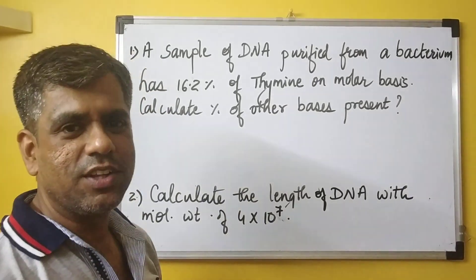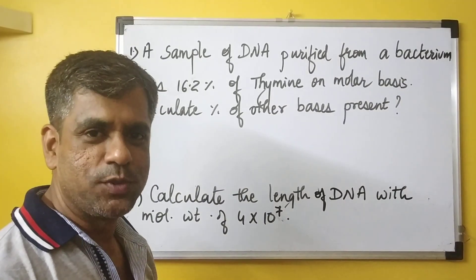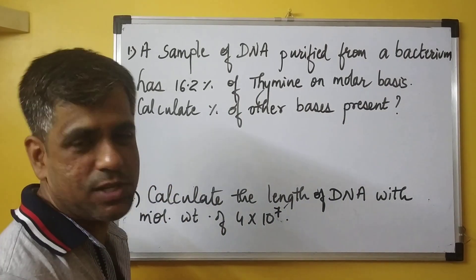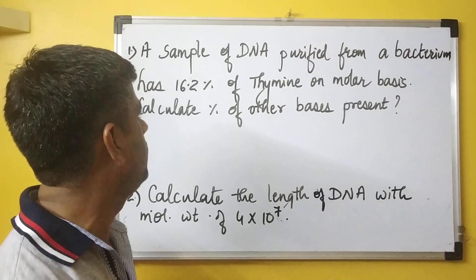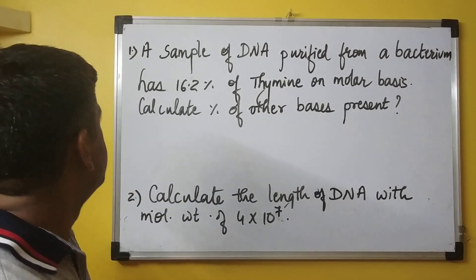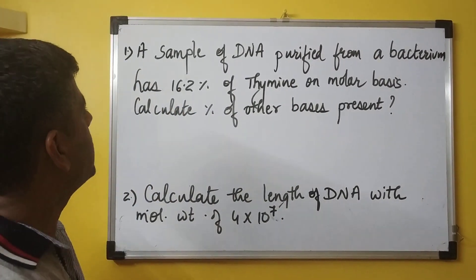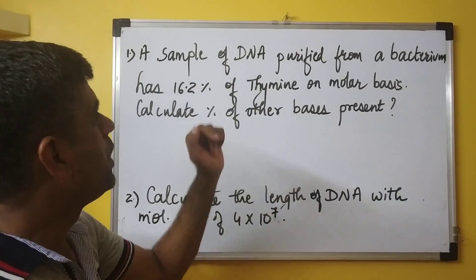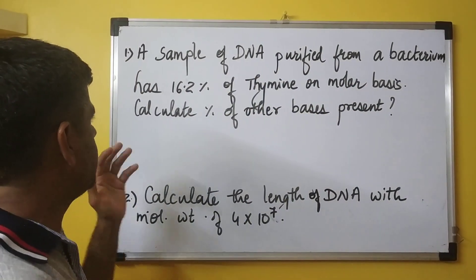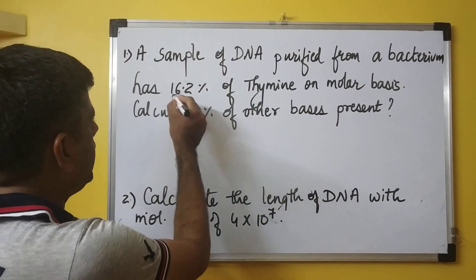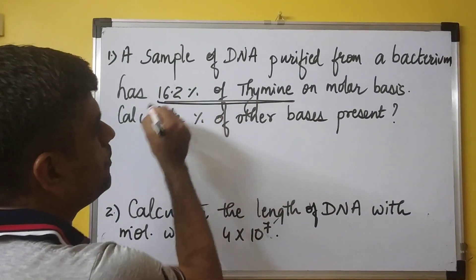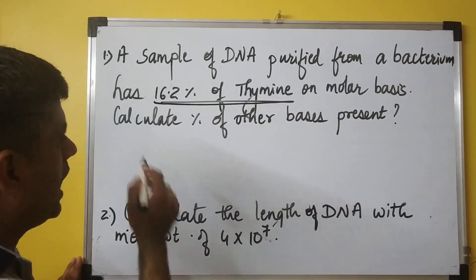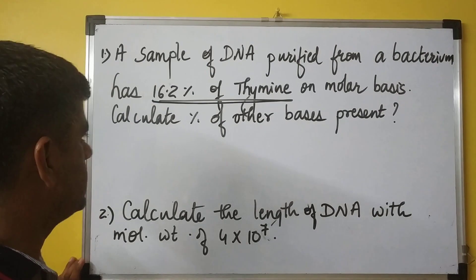Hi guys, we are back with our today's question. Today we have nucleotides and nucleic acids. Specifically we will be dealing with DNA. The first question reads: a sample of DNA purified from a bacterium has 16.2% of thymine on a molar basis. You have to calculate the percentage of the other bases.